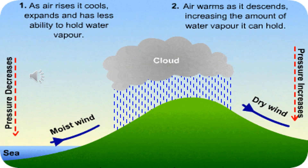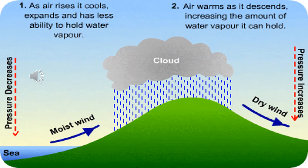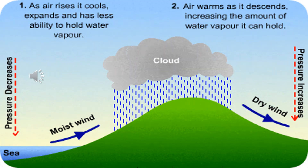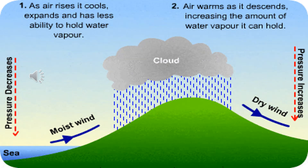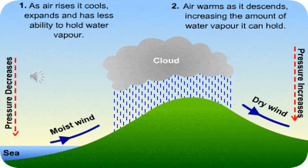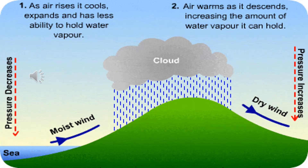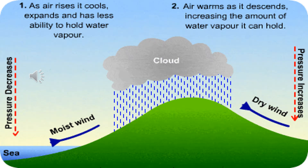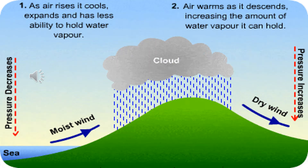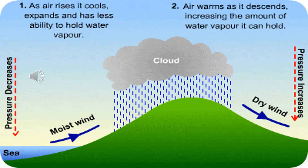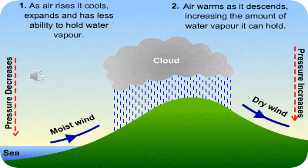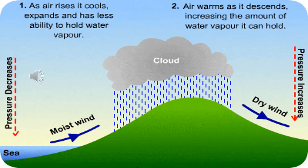The cold desert in the northern parts of Pakistan in Skardu is an example of this effect. This area receives less rainfall because it is situated on the leeward side and experiences the rain shadow effect.